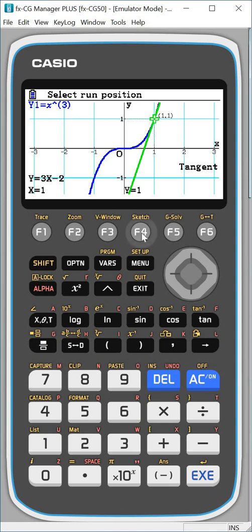Let's look at the normal. So we go sketch and then F3 for normal and we'll do it at the same point. So one, execute and execute again. And it gives you that we've got minus a third X plus four thirds is the equation of the normal. And it looks nice and perpendicular here because I made sure my view window was square.